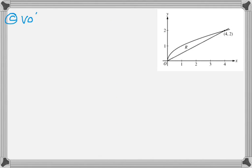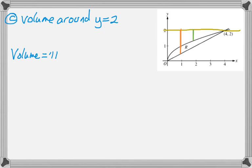And the next one is right but do not evaluate. We're going around the line y equals 2, so I'm going to add that to my picture. I'm going to add the big radius and the smaller radius. And volume is pi, the integral from 0 to 4 of, it's going to be.